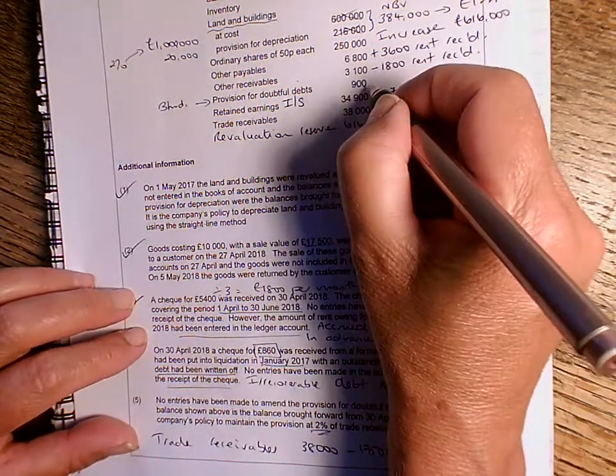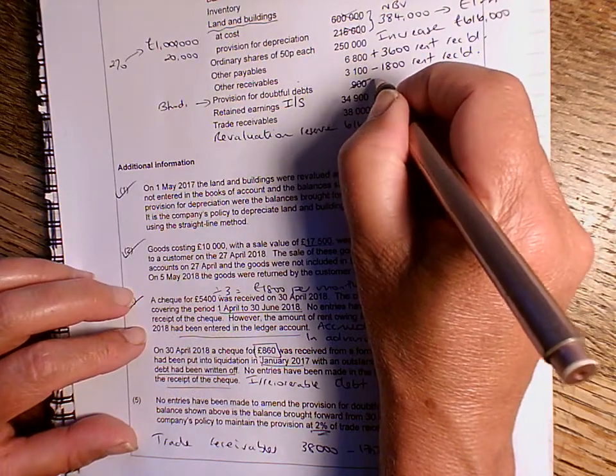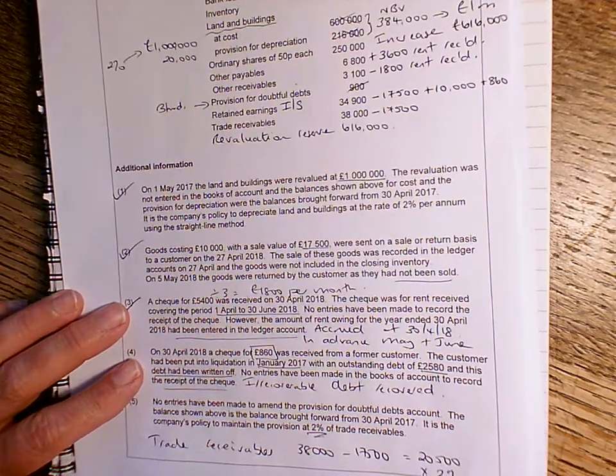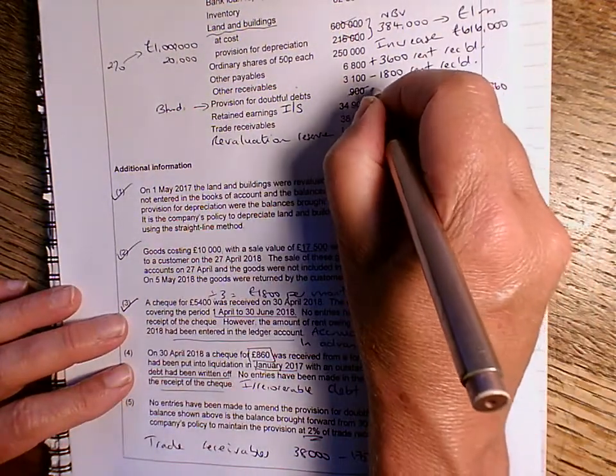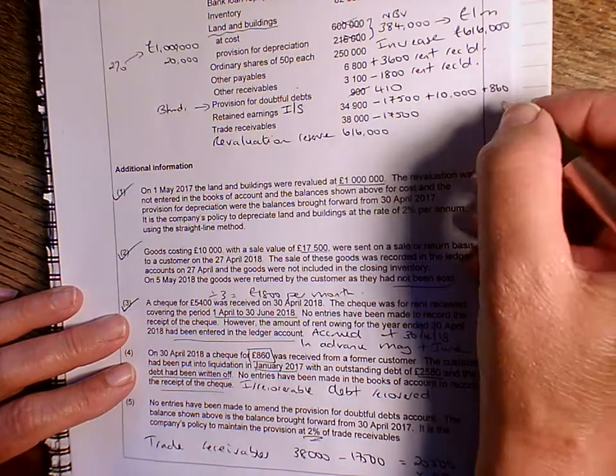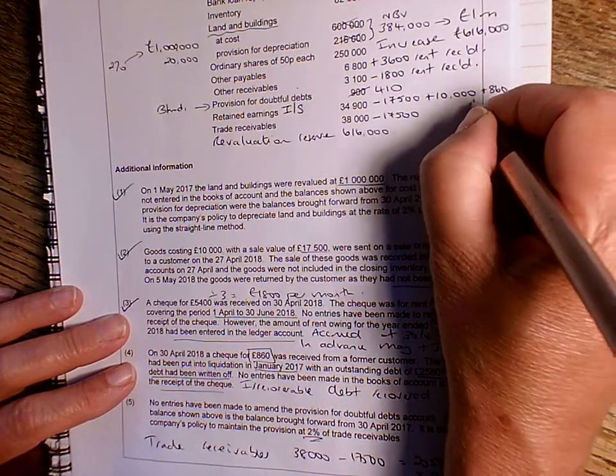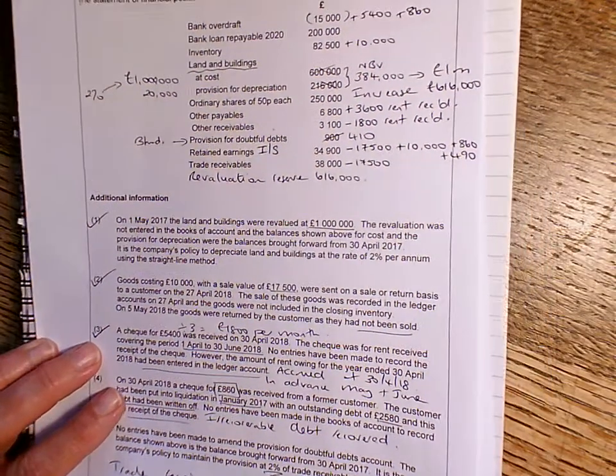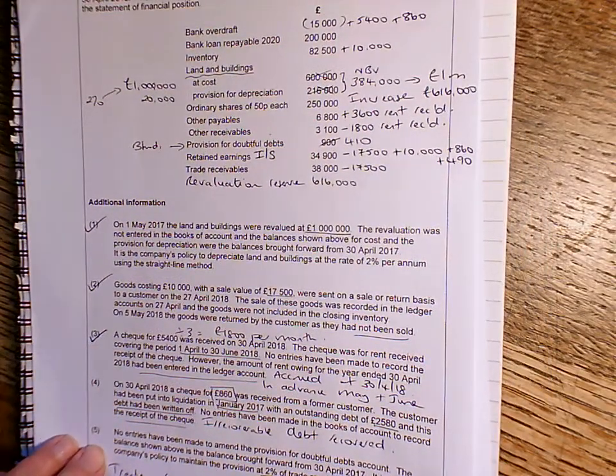So we're going to change that, that's now going to be £410 we need. And the difference, the reduction, the £490, we're going to add to the retained earnings, because that will increase our profit for the year, £490.